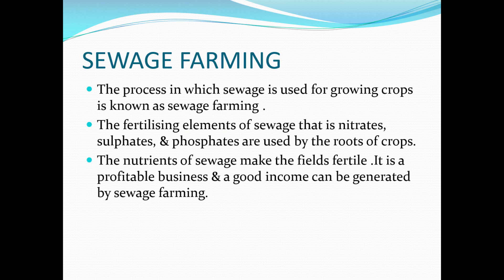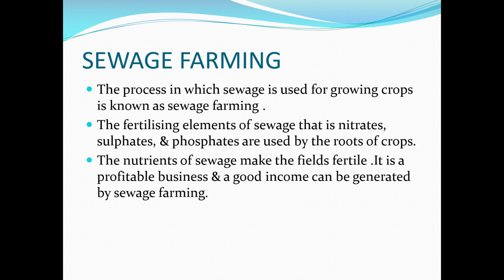Sewage farming is a similar process to broad irrigation using the same elements, but there are different types. The maximum sewage water that can be absorbed varies by soil type: clay soil absorbs around 30 to 35 mega-hectares per day, and settled sewage would be 33 to 35.